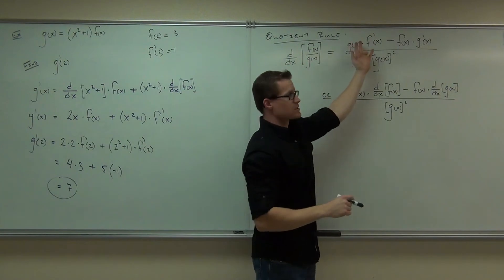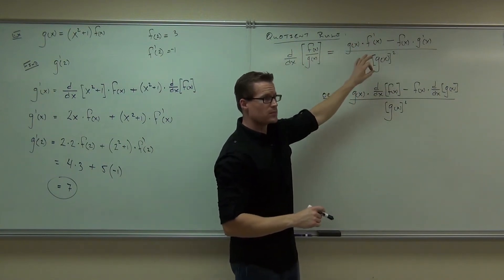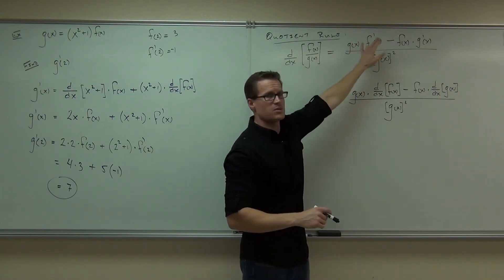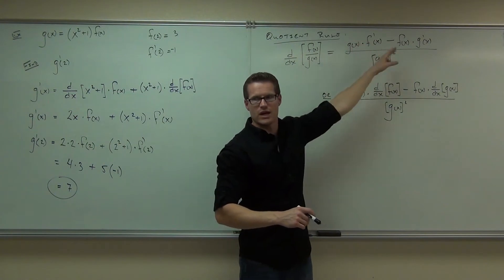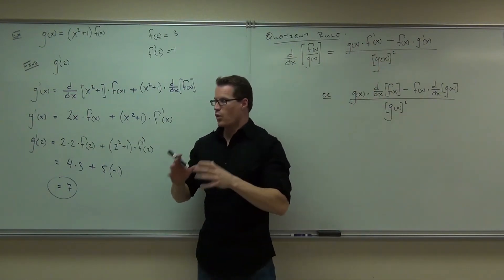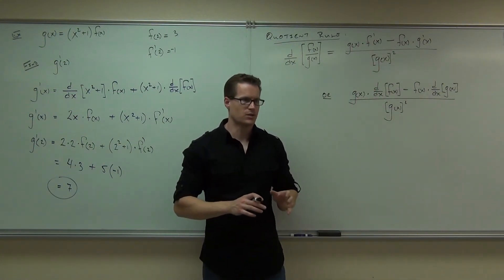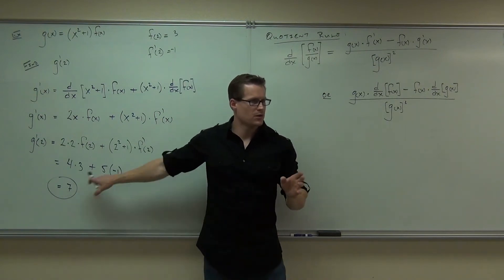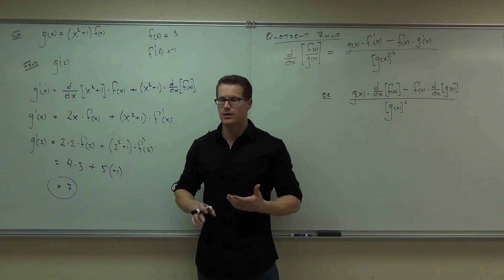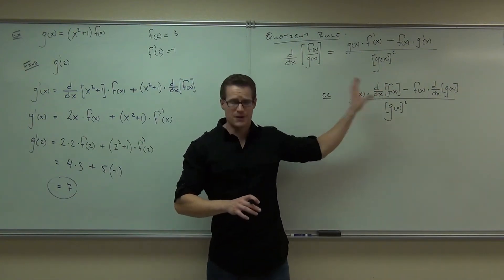You could interchange these - the derivative of the top times the bottom - multiplication is commutative, that would be fine. Subtraction is not, so this is order dependent. You have to do it. That's not true with product rule, is it? That one, it doesn't really matter. But this one very much so matters.